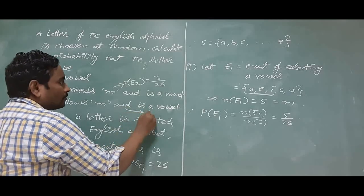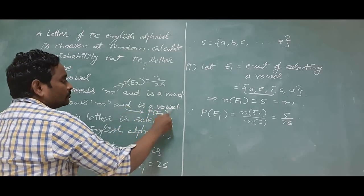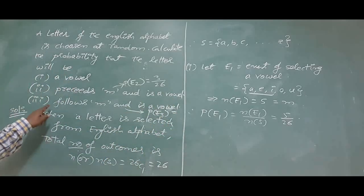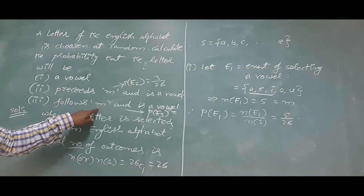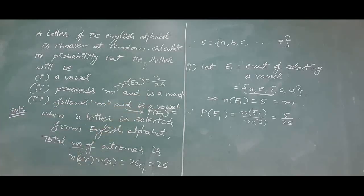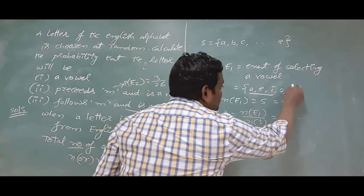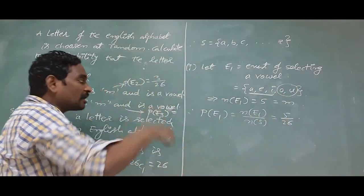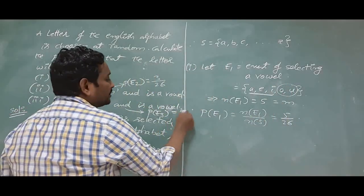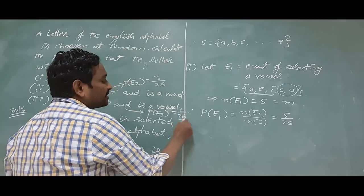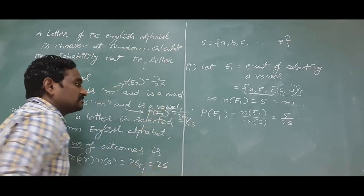And what about the next one, probability of E3? What is the probability to get a letter which follows M and it is a vowel? Only there are two letters after M which are vowels. That is why you will get 2 by 26, otherwise you can write it as 1 by 13 as you wish.